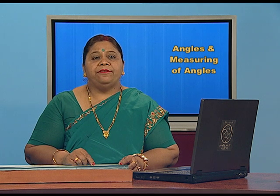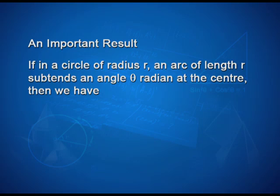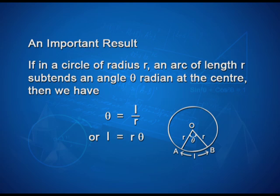Here we have an important result. If in a circle of radius r, an arc of length l subtends an angle θ radians at the center, then θ = l/r, or equivalently l = r·θ.